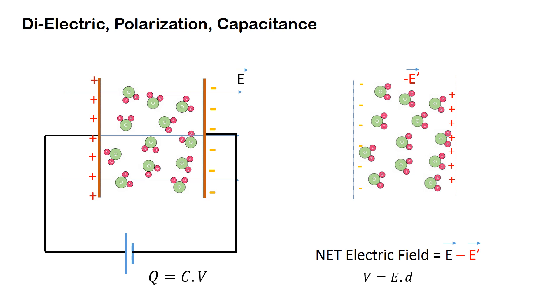When we connect the battery again, charges accrue on the plates of the capacitor so that the electric field E can be established again, as per the voltage applied by the battery.